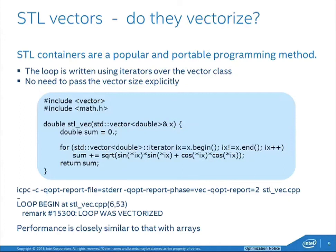When you're using STL, there's a lot under the hood — many little function calls. The compiler's ability to vectorize this really does depend on all that lower-level stuff getting inlined. So this vectorizes fine at O2, but if you were to compile at a lower level or without inlining, it wouldn't. The performance is quite close to, and relatively similar to, what you get writing arrays explicitly.